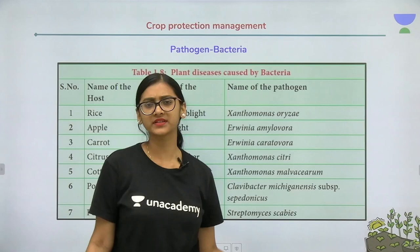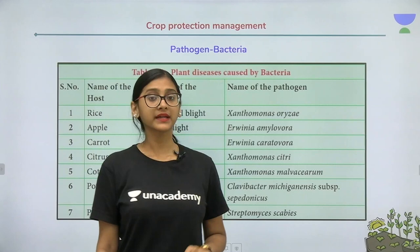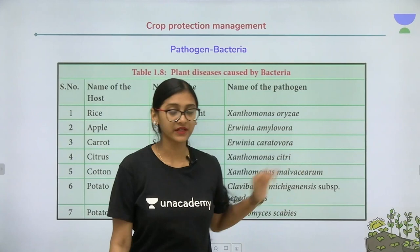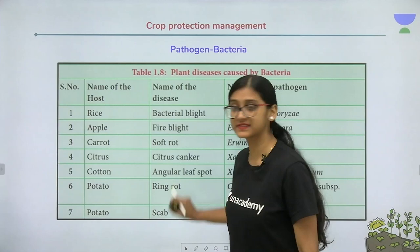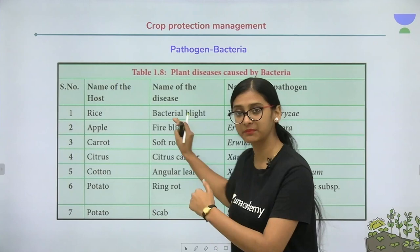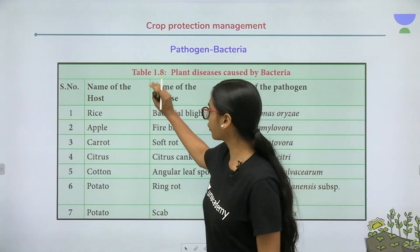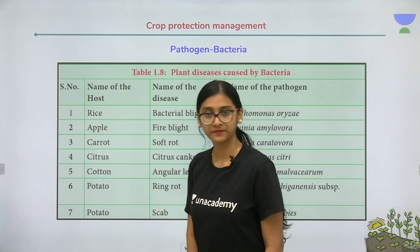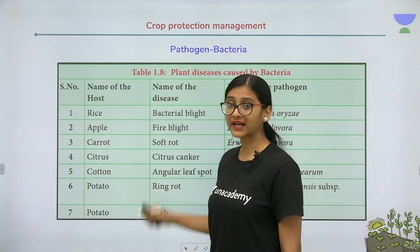Just like how we get diseases from bacteria, protozoans, fungi, and viruses, plants also get diseases from different pathogens. This is very important for competitive exams — you need to know at least a few important diseases. Here is a table of plant diseases caused by bacteria, with the name of the host crop and the name of the disease.